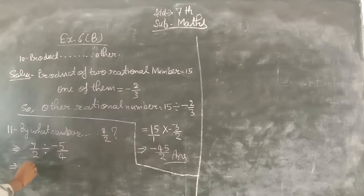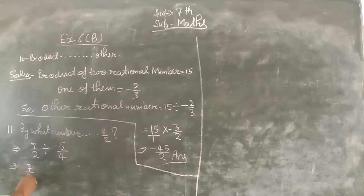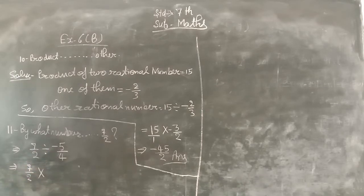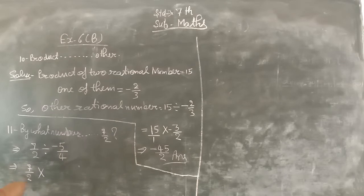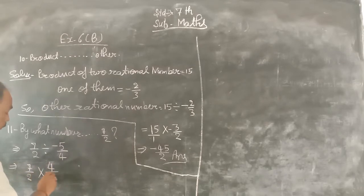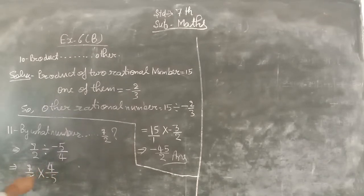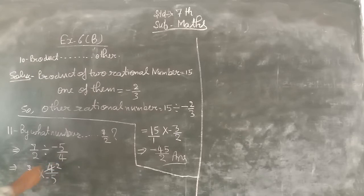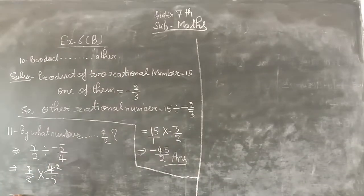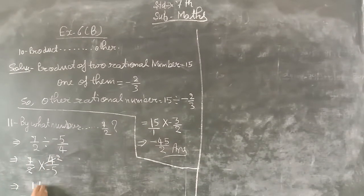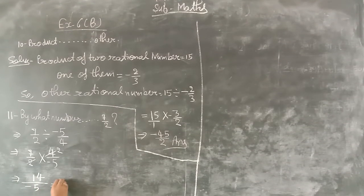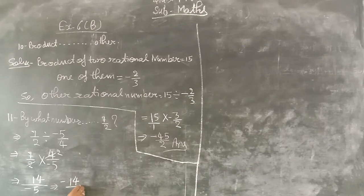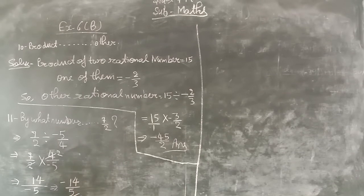The first rational number 7 upon 2 stays the same. Divide changes to multiply by its reciprocal, 4 upon minus 5. 4 and 2 cancel to get 2. So this equals 14 upon minus 5, which is minus 14 upon 5.